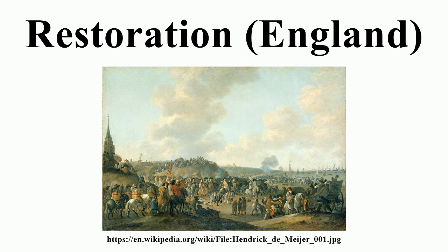The Protectorate and the Commonwealth which preceded the English Restoration might have continued if Oliver Cromwell's son Richard, who was made Lord Protector on his father's death, had been capable of carrying on his father's policies. Richard Cromwell's main weakness was that he did not have the confidence of the army. After seven months, an army faction known as the Wallingford House Party removed him on 6 May 1659 and reinstalled the Rump Parliament.